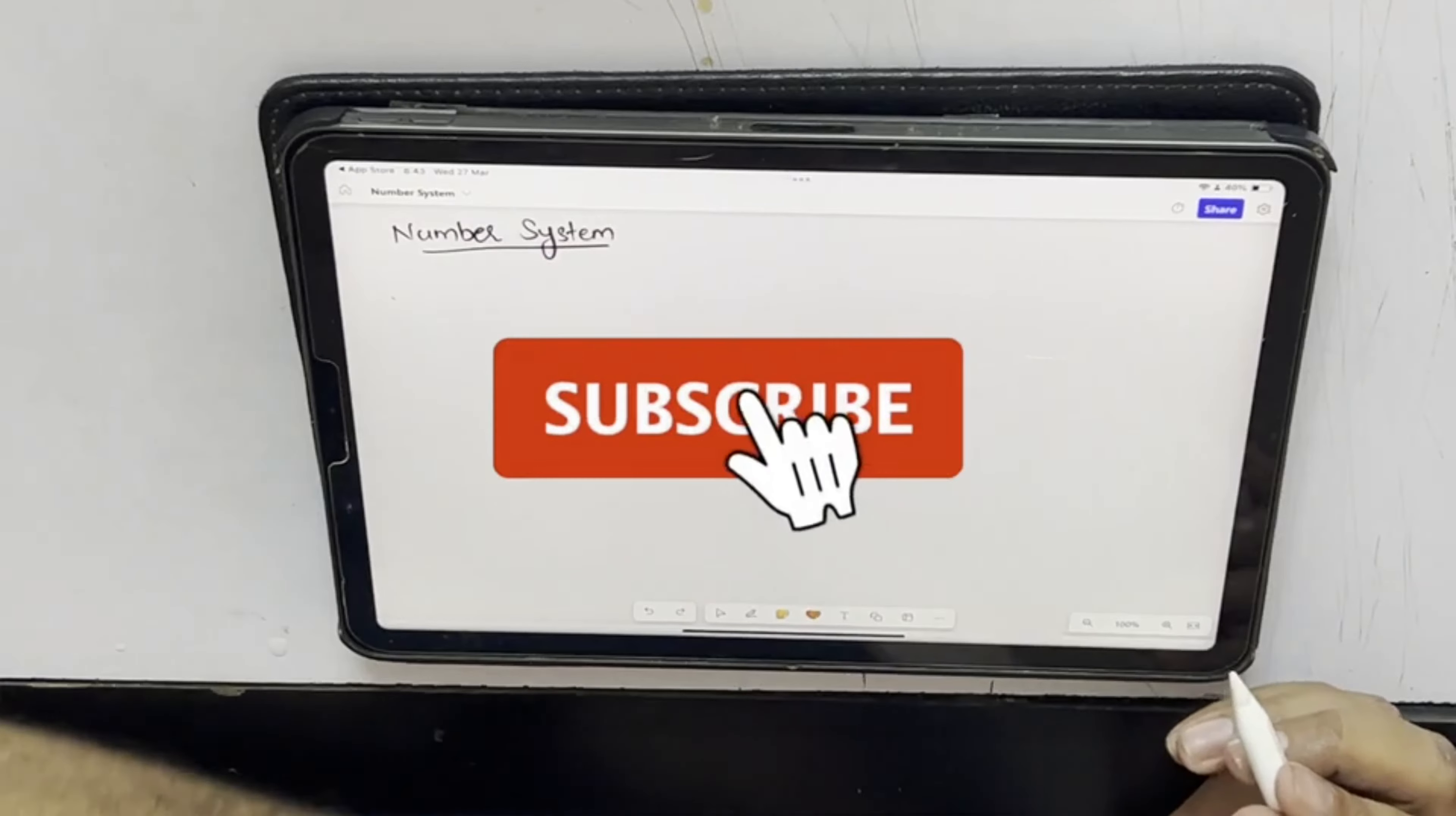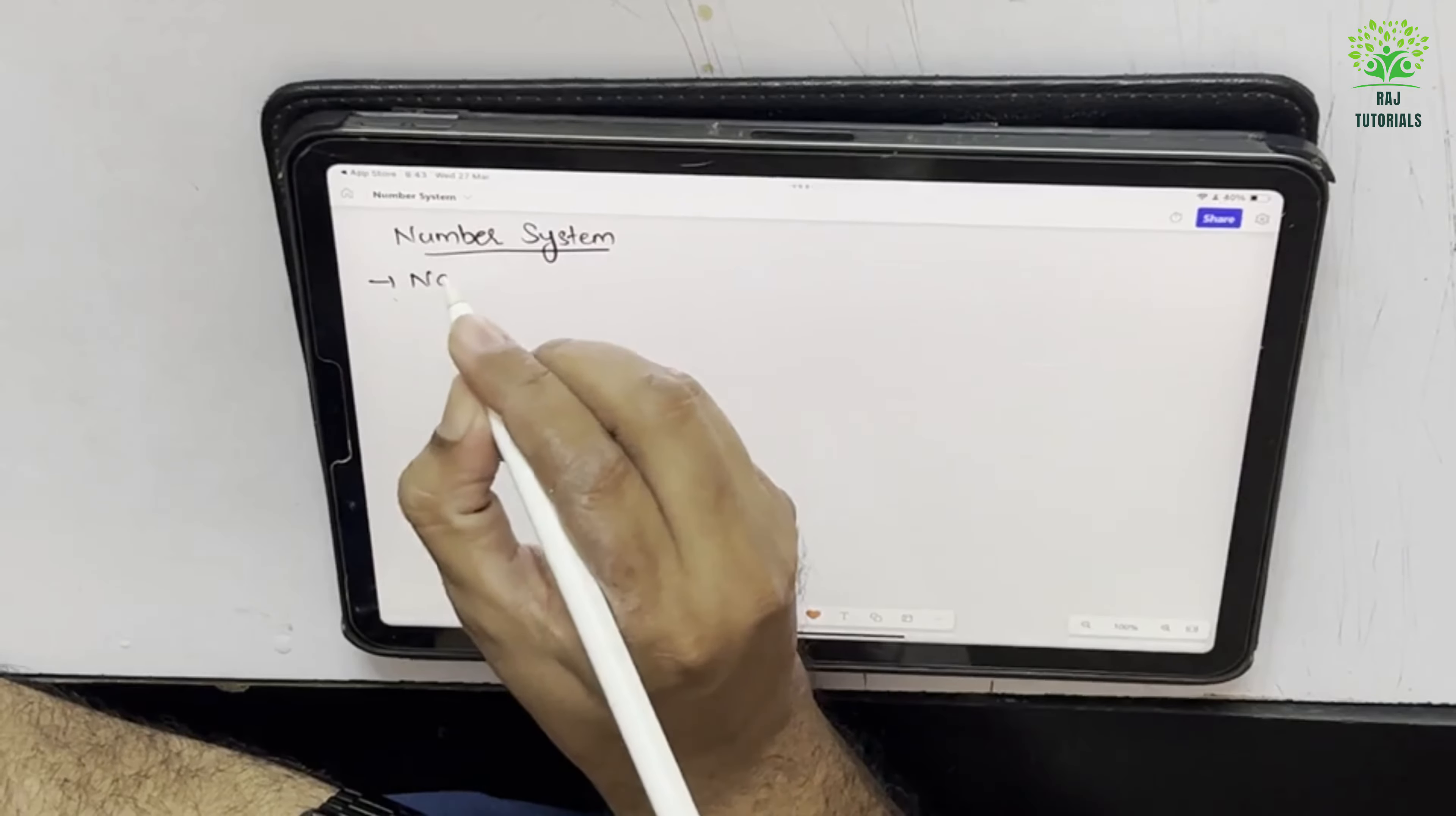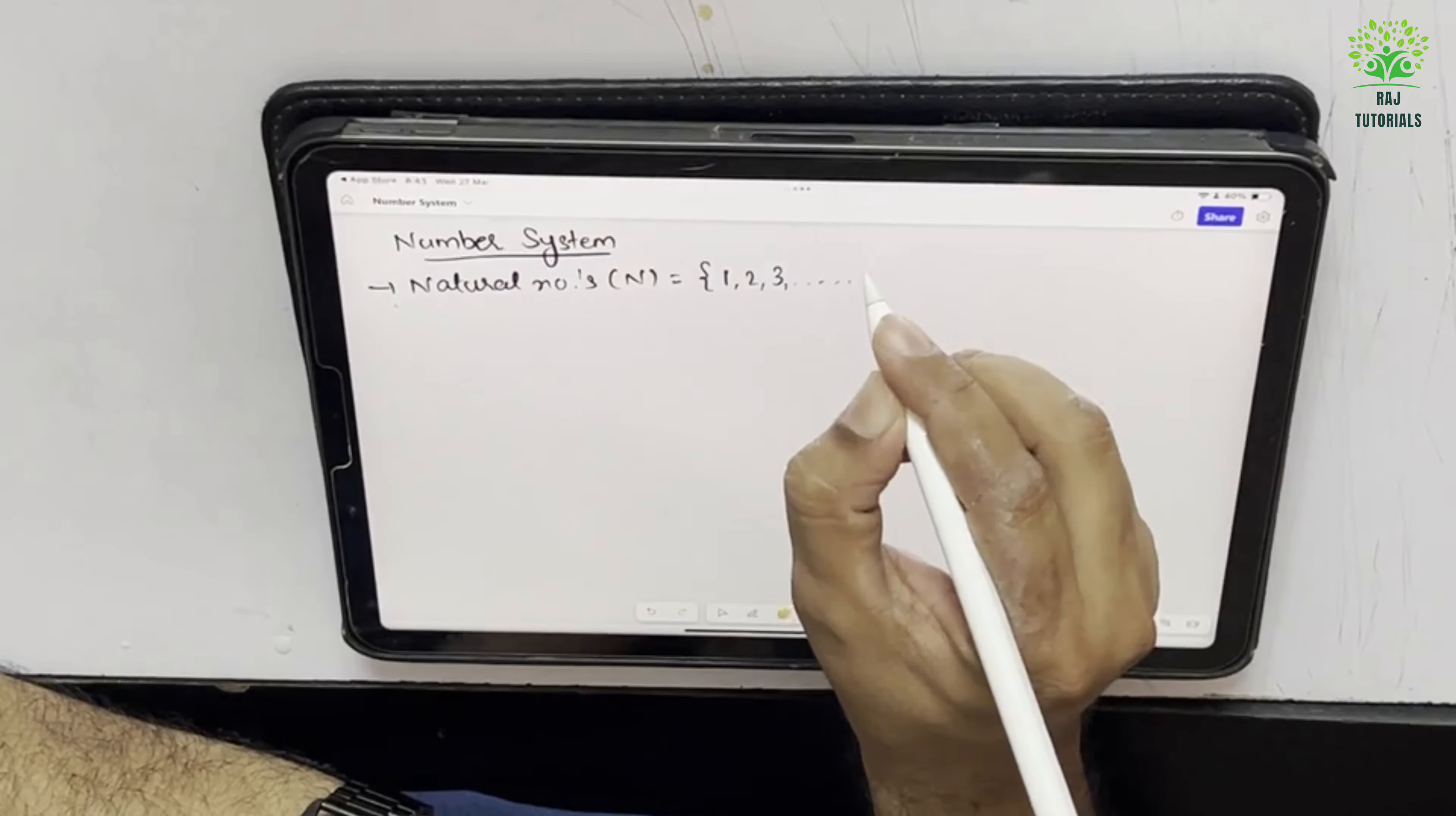The new topic which we are going to start is number system, and the first topic in that is the introduction. So here we're talking about the types of numbers. The first numbers which we know are natural numbers, represented with N, and they are 1, 2, 3 till infinity.